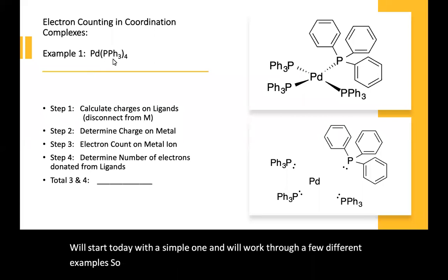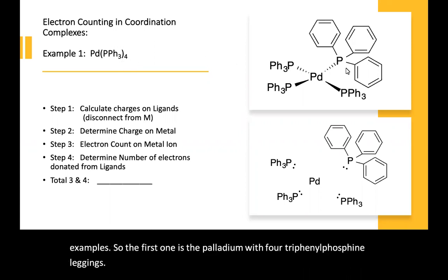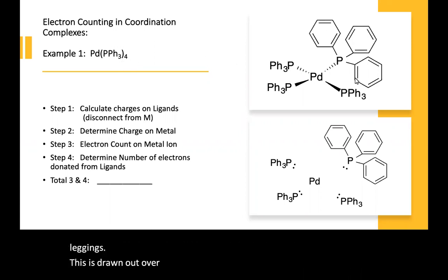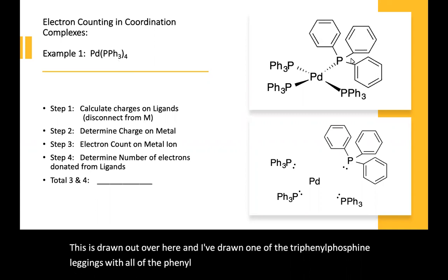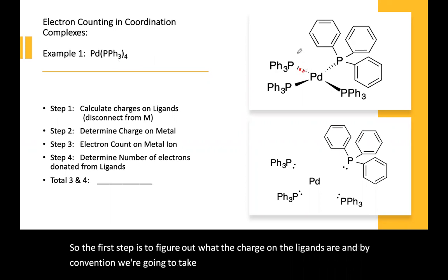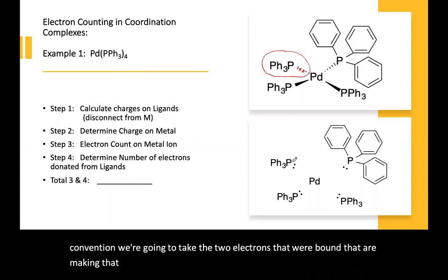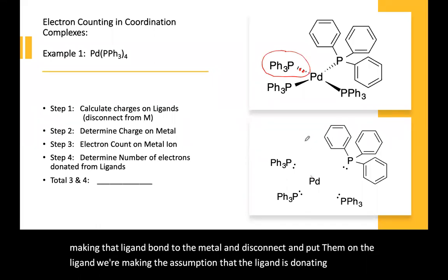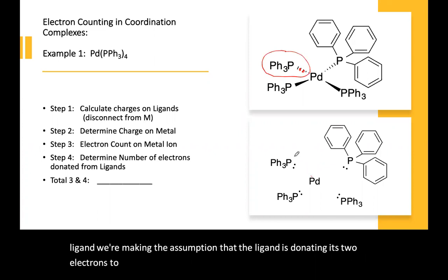The first example is palladium with four triphenylphosphine ligands. This is drawn out over here, and I've drawn one of the triphenylphosphine ligands with all of the phenyl rings around it. The first step is to figure out what the charge on the ligands are. By convention, we take the two electrons that are making the ligand bond to the metal, disconnect, and put them on the ligand — making the assumption that the ligand is donating its two electrons to the metal.